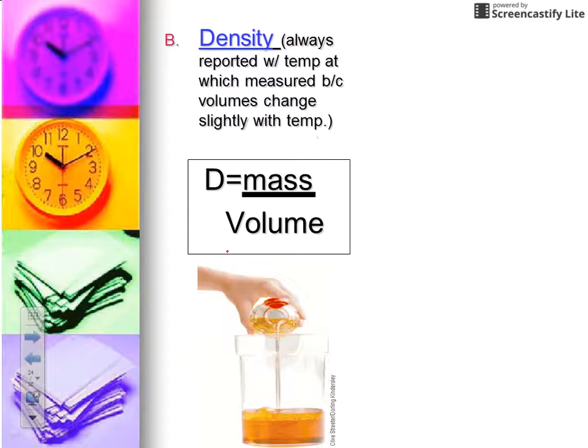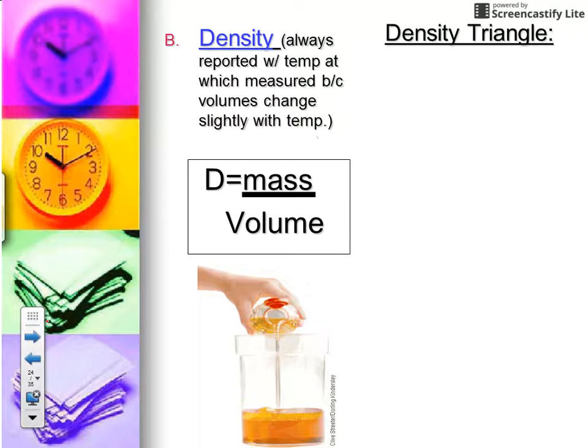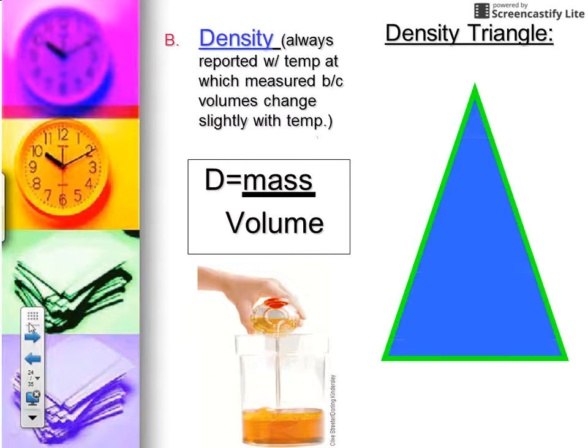Now oftentimes you're going to have to rearrange and solve for something other than just density, so that's where the density triangle comes in really handy. If you were to take a triangle and put a T here in the middle like I have here and think DMV, like division of motor vehicles, DMV, this allows you to get any relationship that you might need mathematically between the three variables.